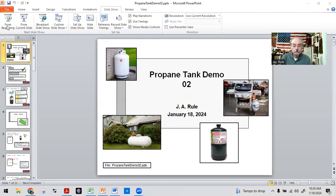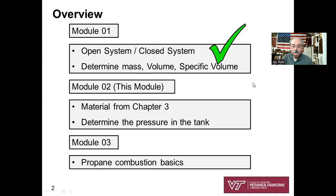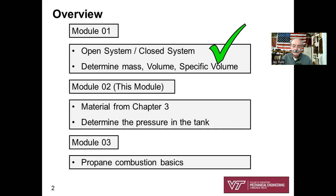Hello again, and welcome to the second video related to making engineering calculations associated with propane. This is the second video in a set of three. We're going to pick up where we left off from the first video and use this propane cylinder as our example. In the last video, we determined the mass in this vessel, the volume of the vessel, and then the specific volume from those two. This module is related to chapter three on phase change substances.